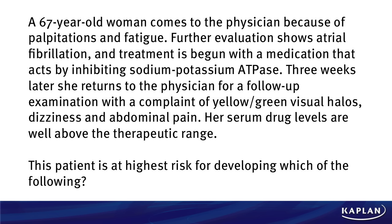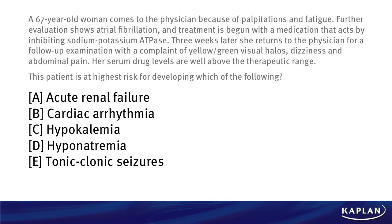This patient is at highest risk for developing which of the following? Is it A, acute renal failure; B, cardiac arrhythmia; C, hypokalemia; D, hyponatremia; or E, tonic-clonic seizures?